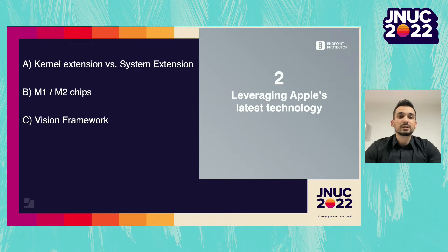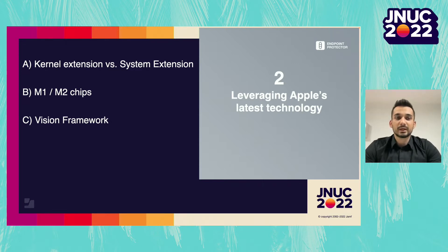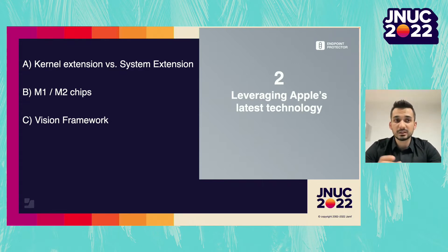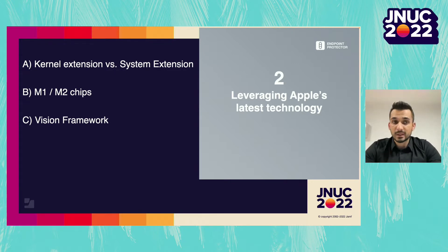The second point is to make sure the vendor is leveraging Apple's latest technologies. I remember the concerns many vendors had when Apple announced deprecating the kernel extension a couple of years ago — everybody just panicked. We also thought that without the kernel extension, we would lose some DLP features. But actually that wasn't the case. On the contrary, after rebuilding our agent using Apple's Endpoint Security Framework, we ended up with a more stable agent and introduced more granularity in terms of detection.